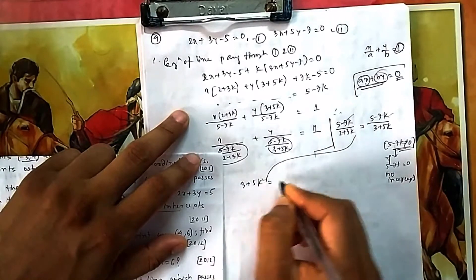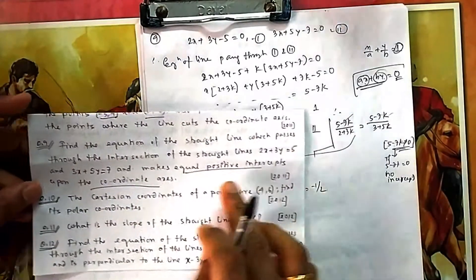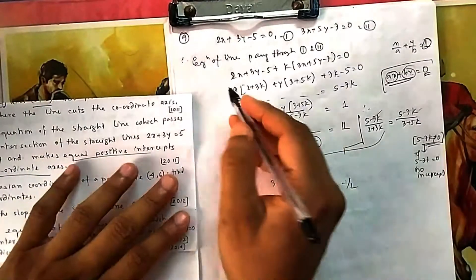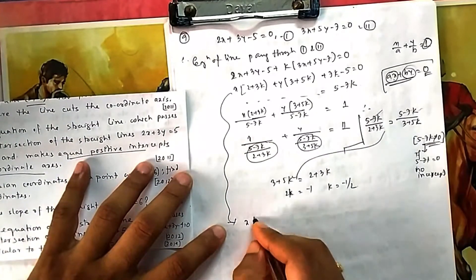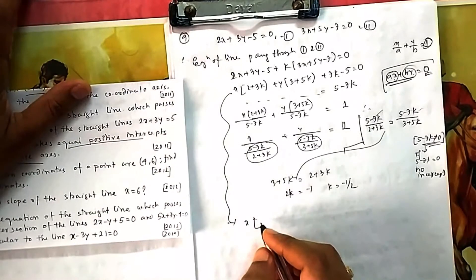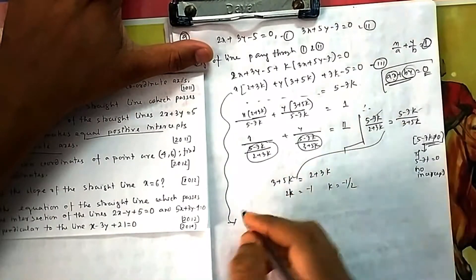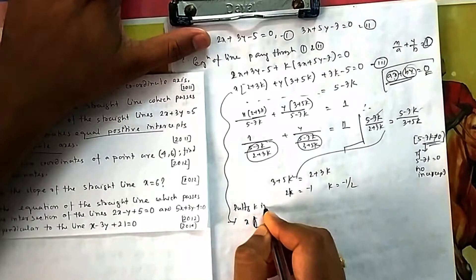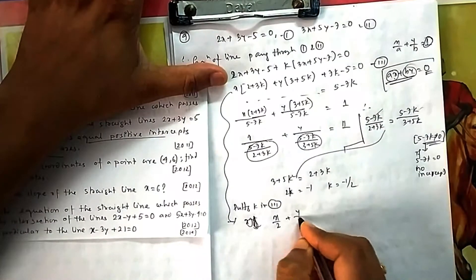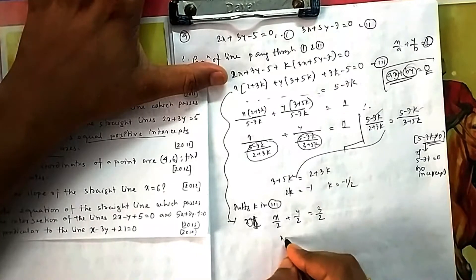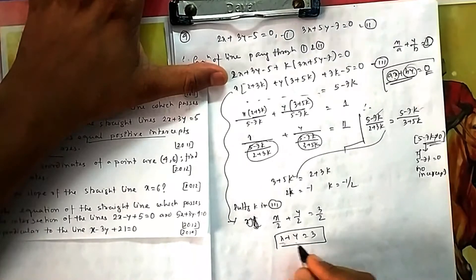Setting the intercepts equal: 3 plus 5k equals 2 plus 3k, giving 2k equals minus 1, so k equals minus 1/2. Substituting k back into the equation of the line gives x/2 plus y/2 equals 3/2, which simplifies to x plus y equals 3. The x-intercept is 3 and the y-intercept is 3, confirming equal positive intercepts.